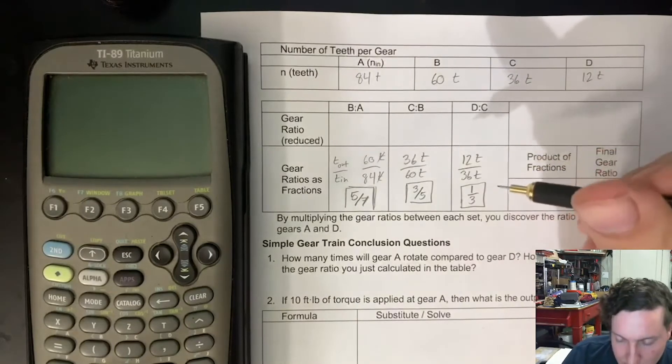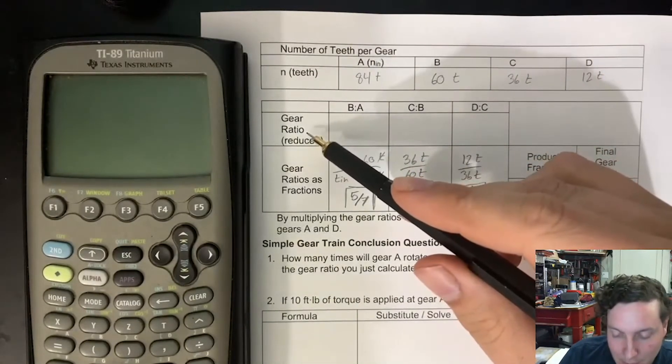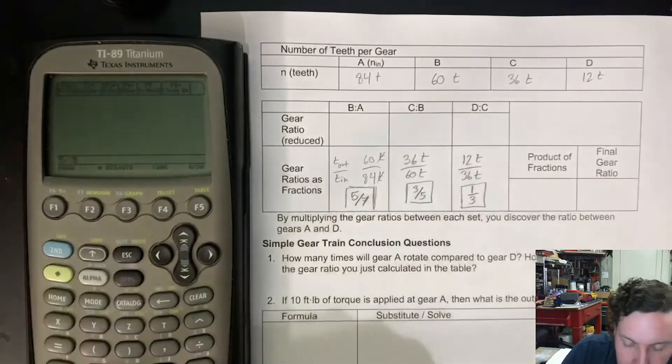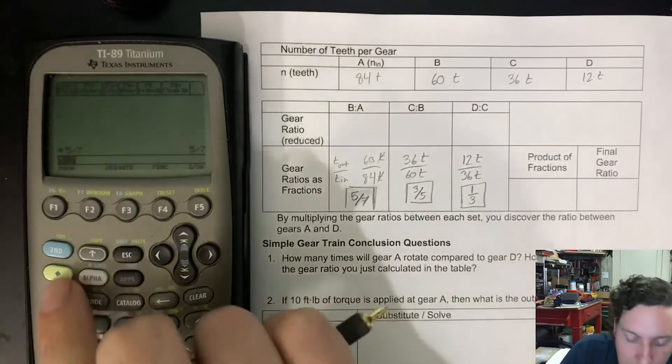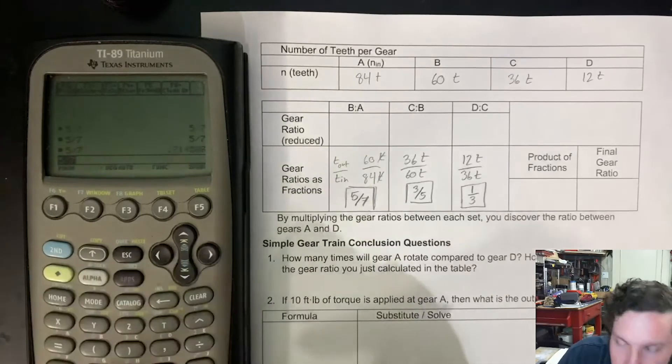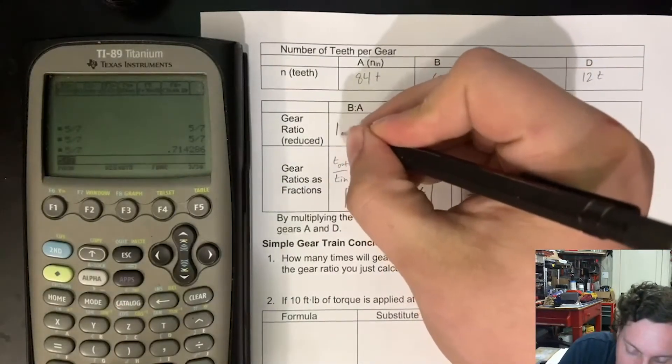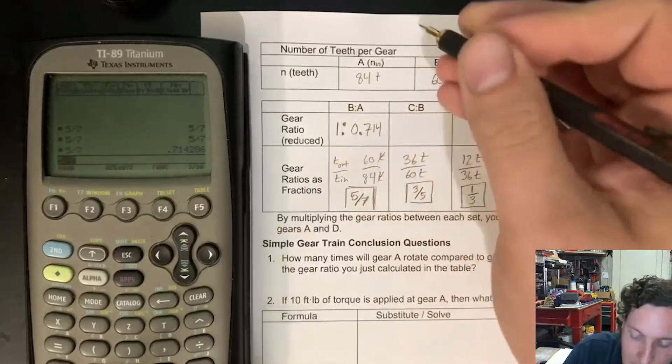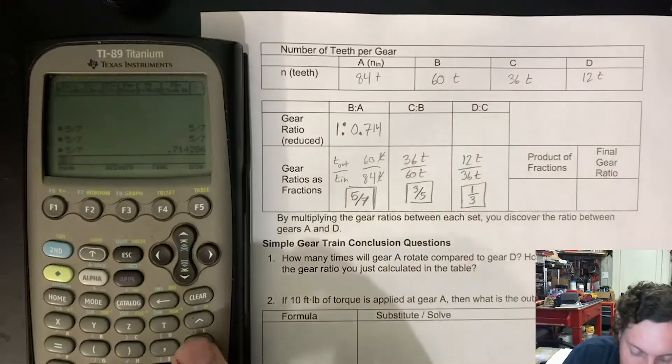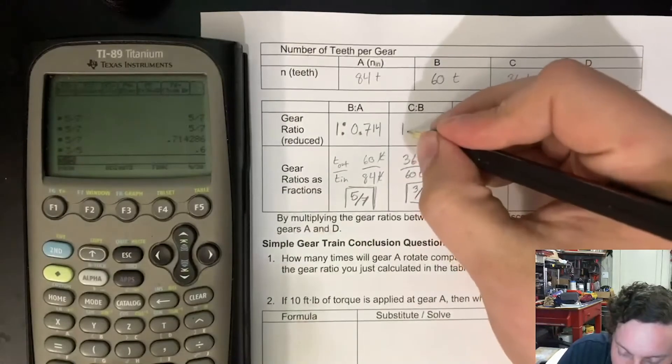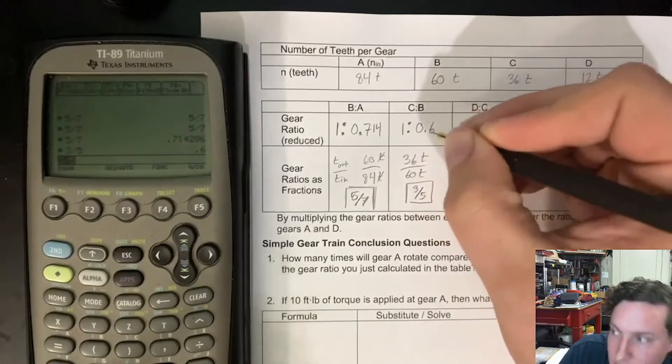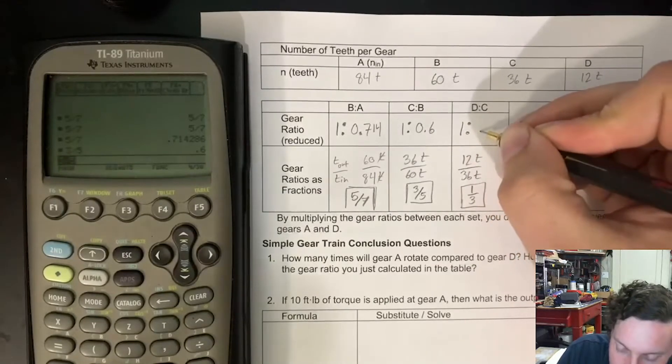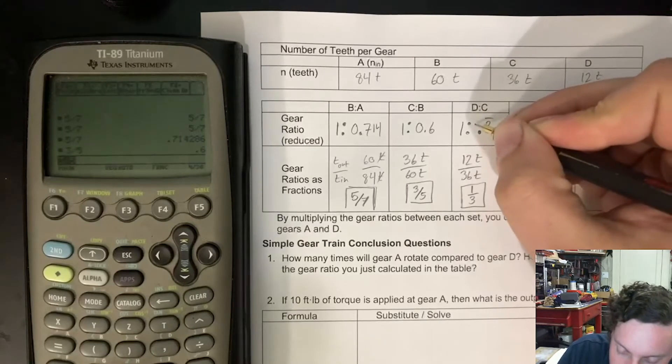The next part is we can calculate the gear ratio decimal equivalent. This is where we can pull out our calculator and say 5 sevenths, we need the actual decimal value. This is basically a 1 to 0.714 ratio. We can do the same thing for each one of these. 3 fifths is 1 to 0.6 ratio, and then 1 divided by 3 gives us a 1 to 0.3 repeating value.